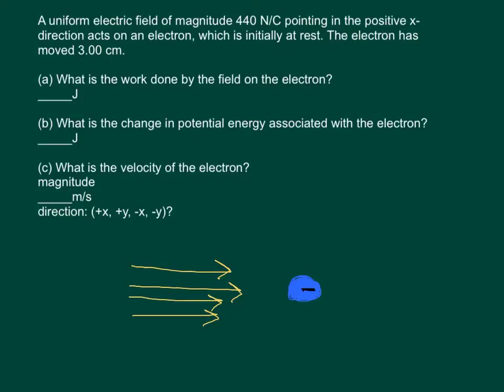A uniform electric field of magnitude 440 newtons per coulomb, pointing in the positive x direction, acts on an electron which is initially at rest. The electron has moved 3 centimeters. What is the work done by the field on the electron? What is the change in potential energy associated with the electron? What is the velocity of the electron, and what is the direction?